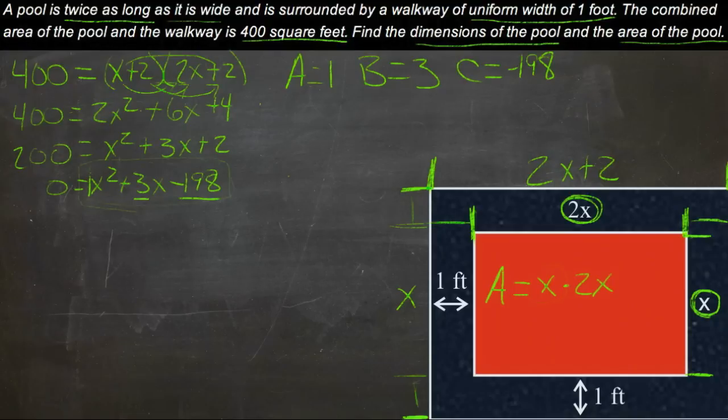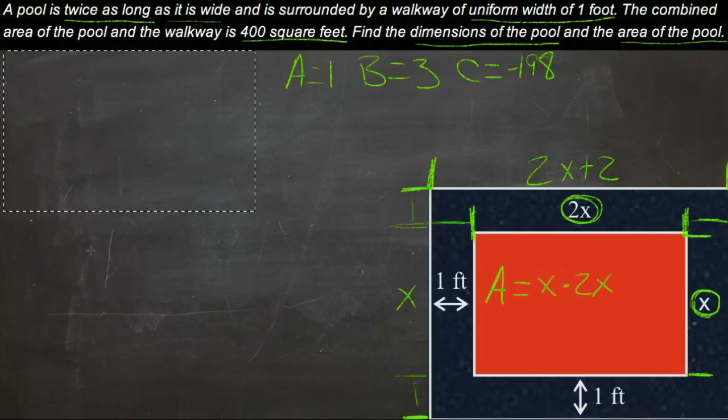We'll plug all that into the quadratic formula. Let me make us a little more room here, and we'll run that through the quadratic formula. So our quadratic formula is negative b, or negative 3, plus or minus the square root of b squared, so 3 squared, which is 9,